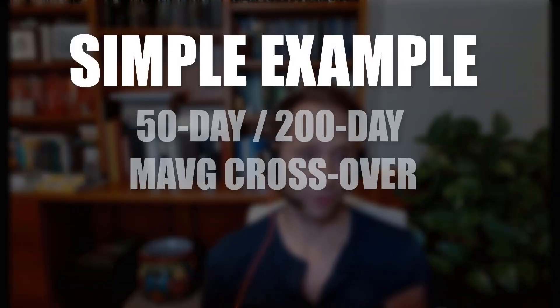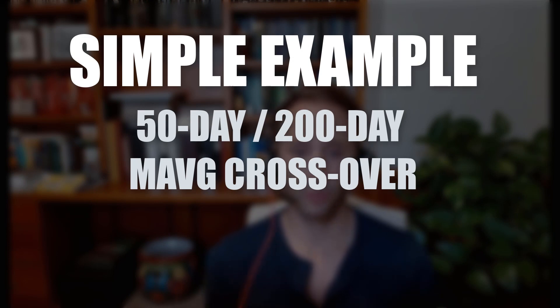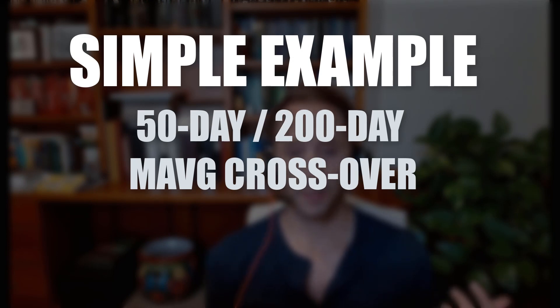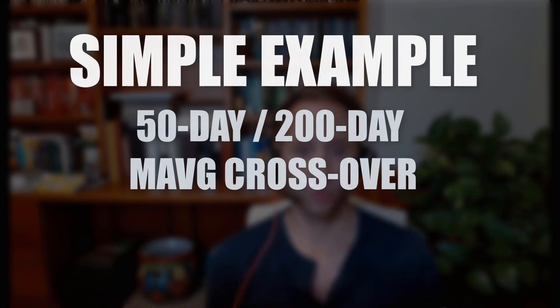Simple example: you have a simple moving average crossover strategy — your 50-day and your 250-day moving average. You run your backtest a million times and you ask it to give you the combination of moving averages that maximize the Sharpe ratio.